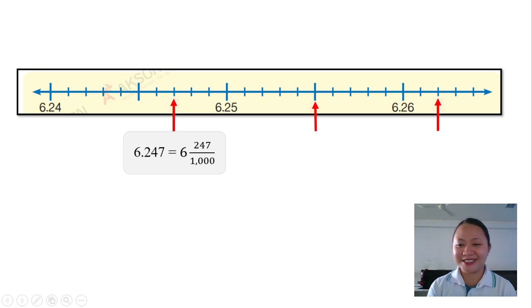How about the second arrow? Good. It represents 6.255. That is equal to 6 and 255 over 1000.